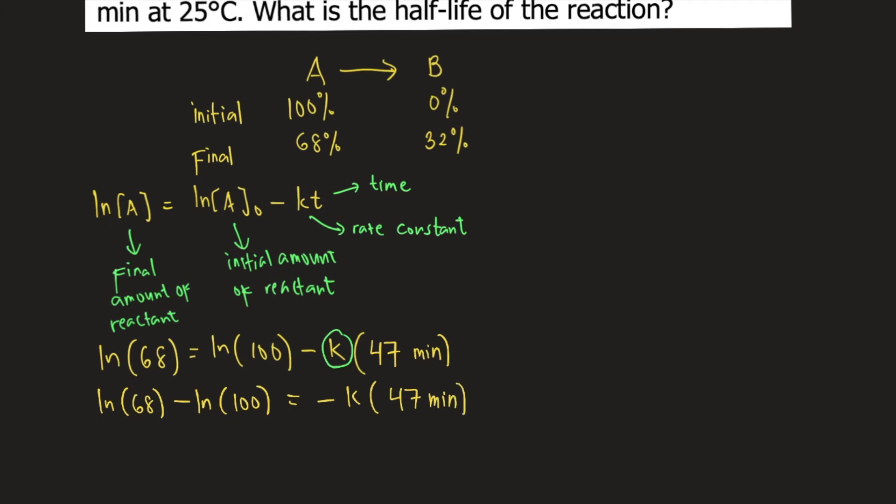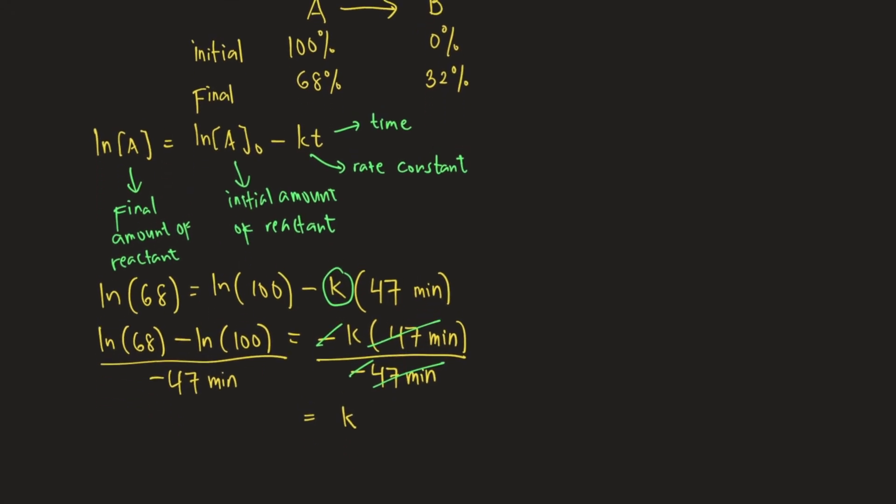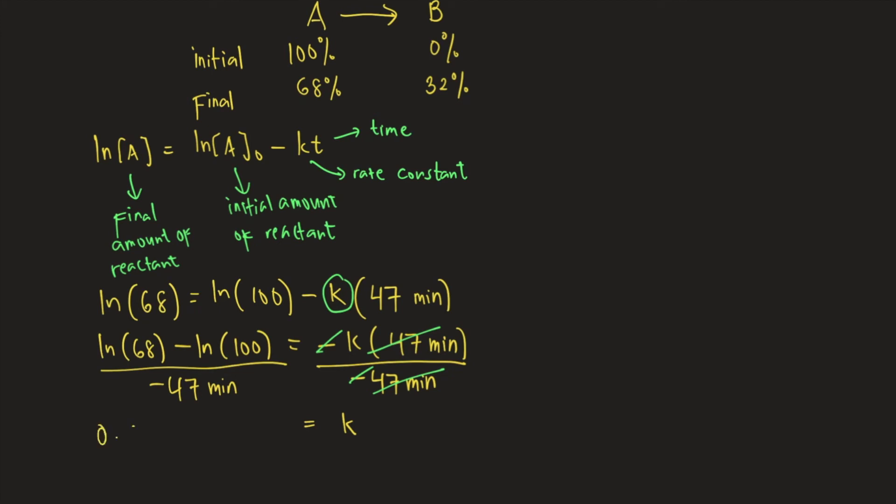If you want to solve for K, you need to divide both sides by negative 47 minutes. So negative would cancel on the right side as 47 minutes would also cancel on the right side. And if you solve for K, or the rate constant, this is equal to 0.008205584698, and the unit for K would be per minute. That's the value of K.